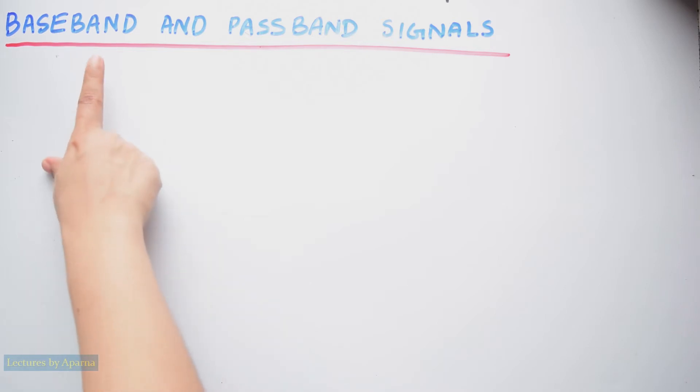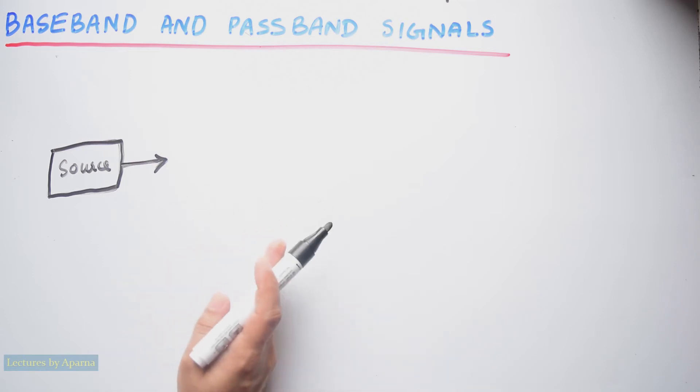First let us see baseband signal. The message signal that is generated from an information source is known as baseband signal. They can be both analog signal and digital signal. Also baseband signal can be a combination of two or more message signals.